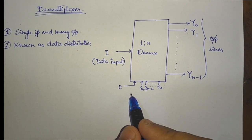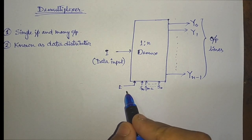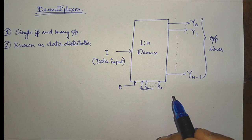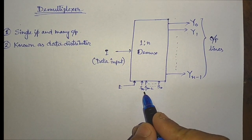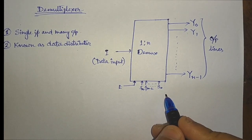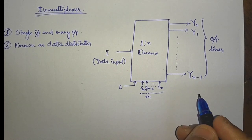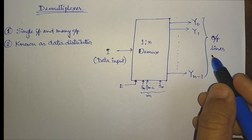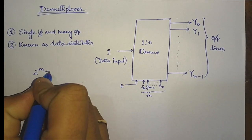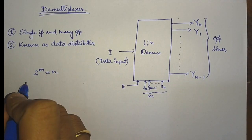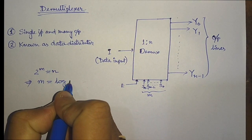We will have an enable input that activates the circuit when it is 1, and when E equals 0 the circuit won't operate. We will have select lines from S(m-1) to S0, giving us m number of select lines. The relation between select lines and output lines is 2^m = n, which we can rewrite as m = log₂(n).